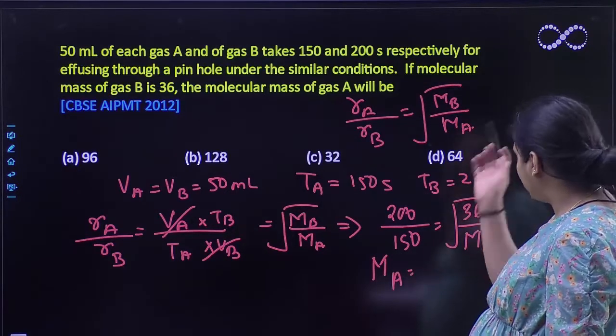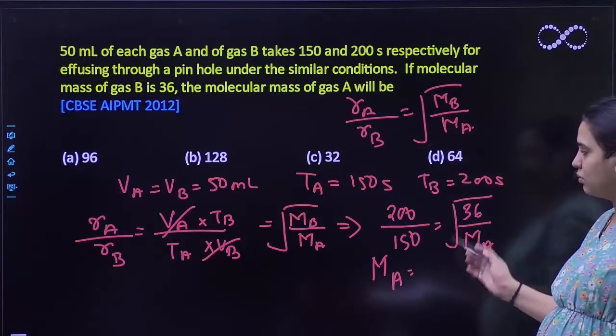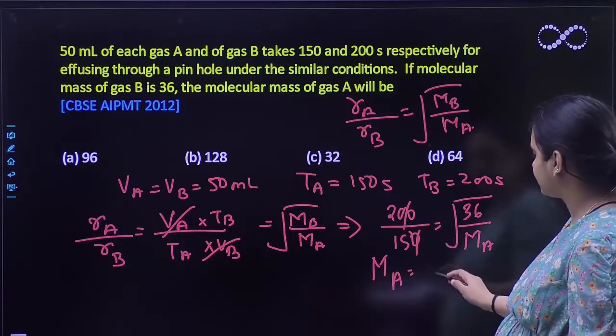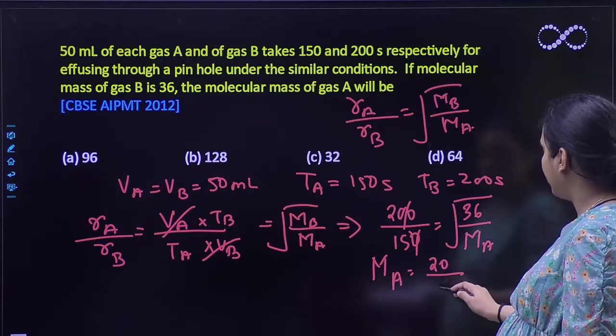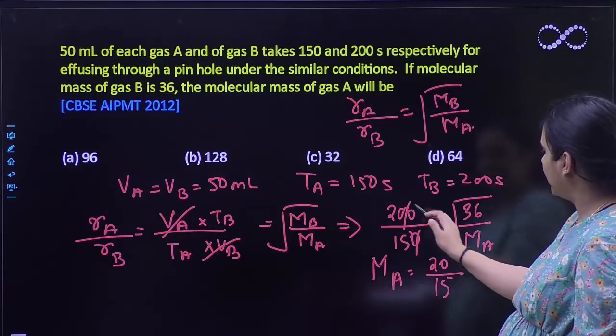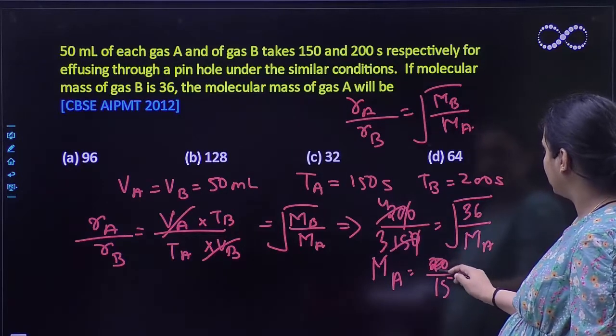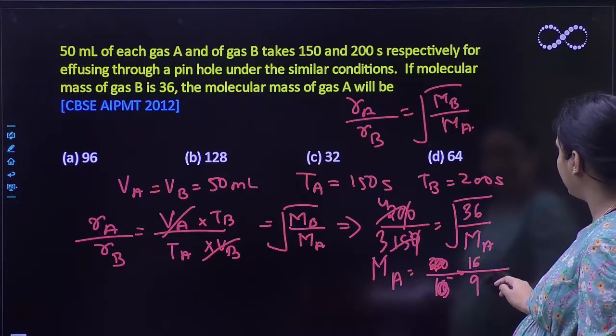Squaring both sides, 200 by 150 simplifies to 4 by 3. So this becomes 16 by 9.